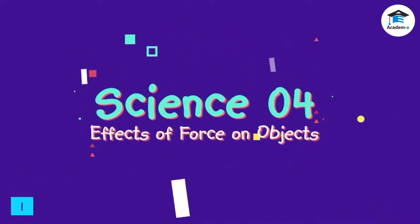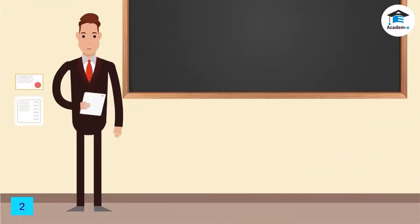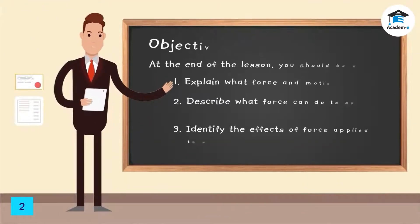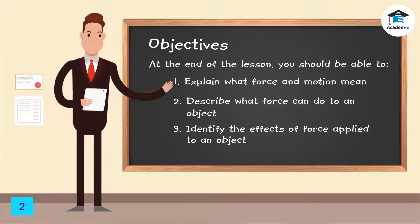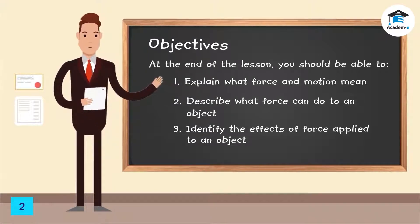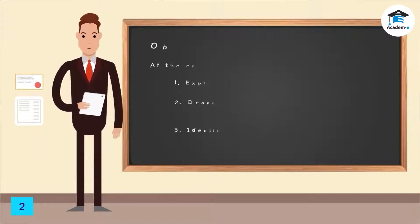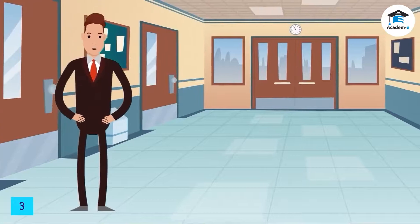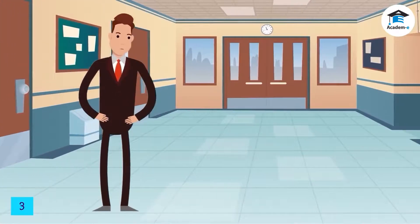Science: Effects of Force on Objects. Objectives: At the end of the lesson, you should be able to explain what force and motion mean, describe what force can do to an object, and identify the effects of force applied to an object. Look around you — you can see people and things moving.